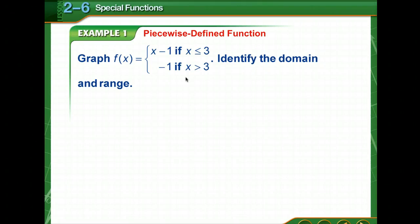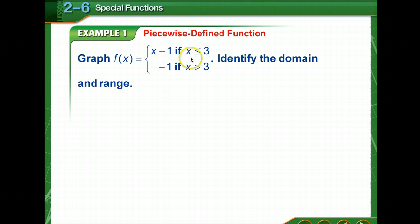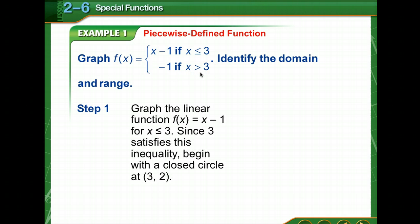Let's look at this. We're to graph f of x, and we are given two different expressions. We're going to use x minus 1 if whatever we substitute in for x is less than or equal to 3, and we're going to use negative 1 if x is greater than 3. So let's see what that looks like so we can graph this function.